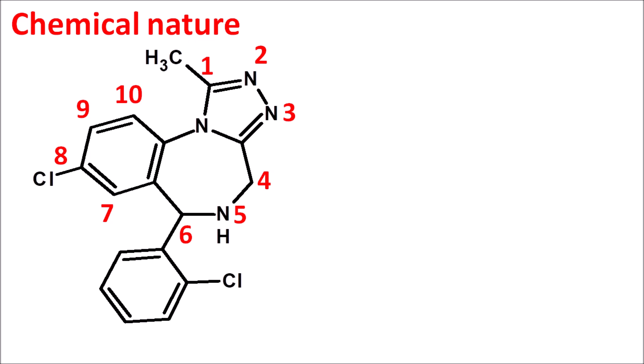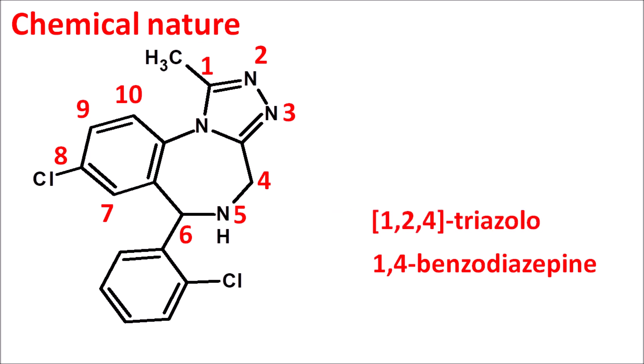Now let us give the name for this structure. It is a benzodiazepine with nitrogens at positions 1 and 4, so we write this as 1,4-benzodiazepine. This 1,4-benzodiazepine is fused with a triazol ring system with three nitrogens at positions 1, 2, and 4 — giving a 1,2,4-triazol ring system. The two ring systems are fused at positions 3 and 4A, written as 4,3A. So the full fused ring name is: 1,2,4-triazol [4,3A] 1,4-benzodiazepine.